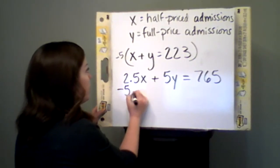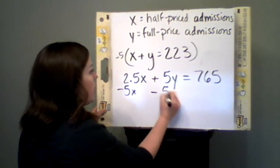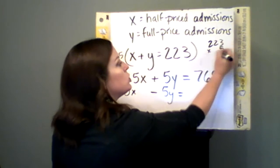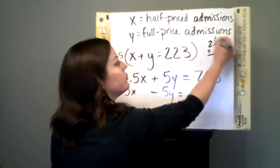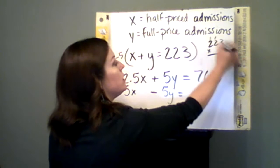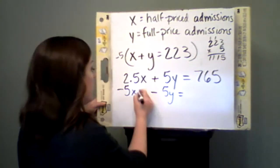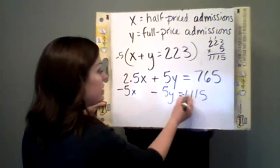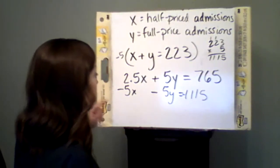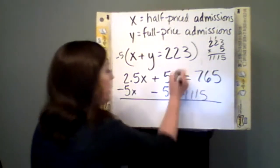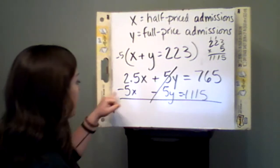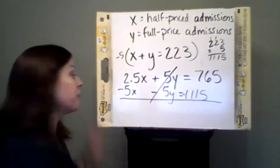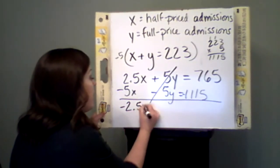When that negative 5 distributes, I get negative 5x minus 5y equals, and of course I don't have a calculator handy, so we got to get a little old school. 5 and 3 is 15, 5 and 2 is 10 plus 1. So that would be 1,115, and that is negative. So now I have gotten rid of my y. Now I have a negative 5 and a positive 2.5, different sign, so I have to find the difference. That's negative 2.5x.